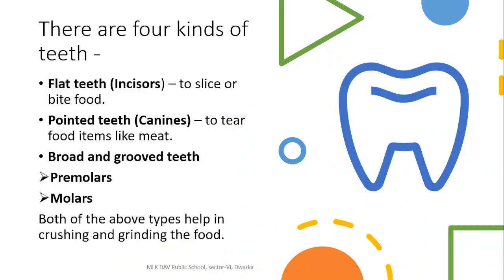Do all the teeth look alike? No, they are of different shapes and sizes. The teeth in front of the mouth are flat in shape — they are called incisors. They help to slice, bite, or break the food. The teeth on either side of the flat teeth are called canines. They are pointy, like a knife, and help to tear food items like meat. You must have seen the teeth in cats and dogs, and on TV you must have seen tigers and lions — they have sharp teeth at the corners of the mouth to tear the flesh of prey. And there is another different kind of teeth behind the canines. They are broad and have grooves on them — they are called premolars and molars. These two kinds of teeth help in crushing and grinding the food.